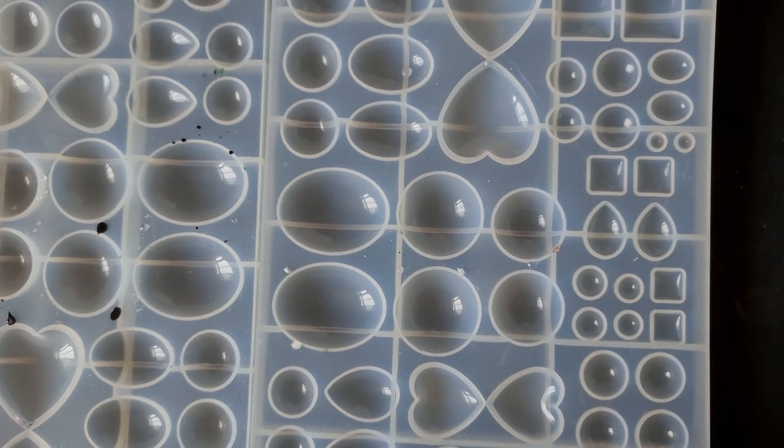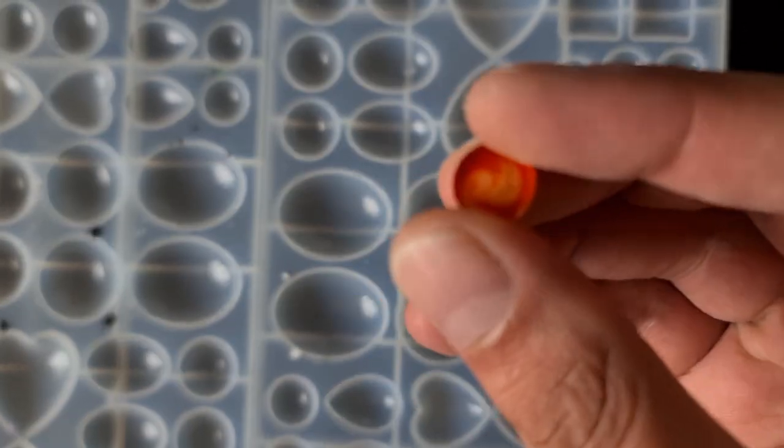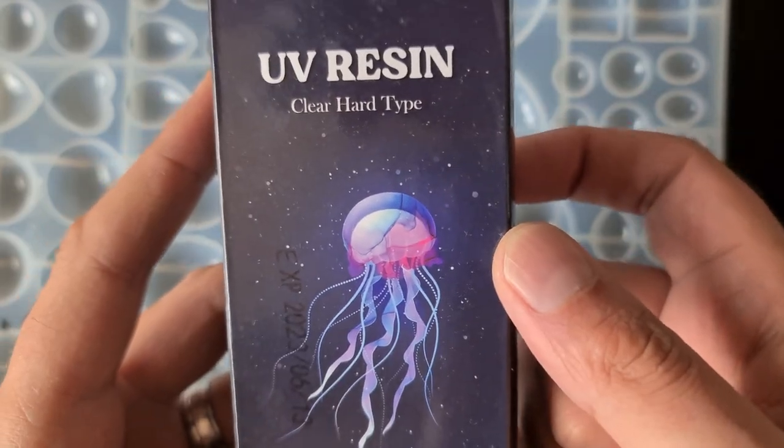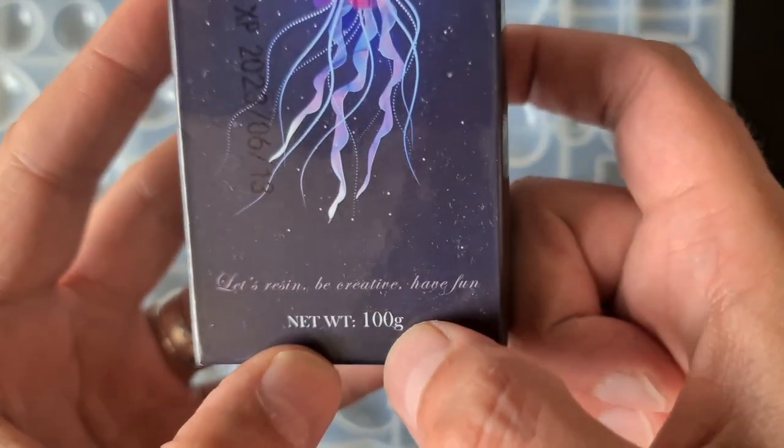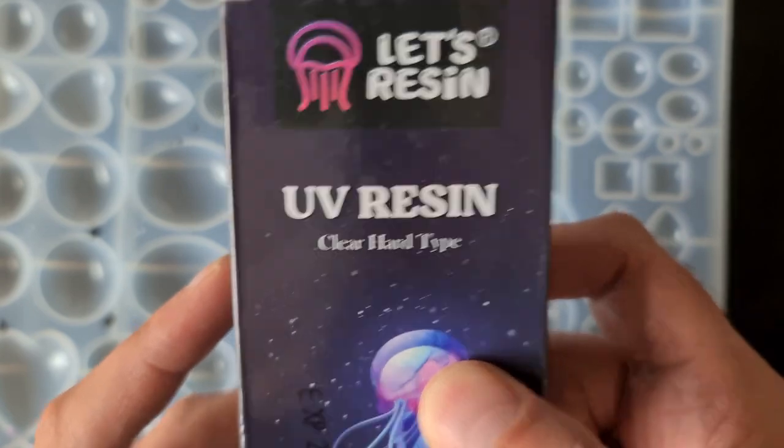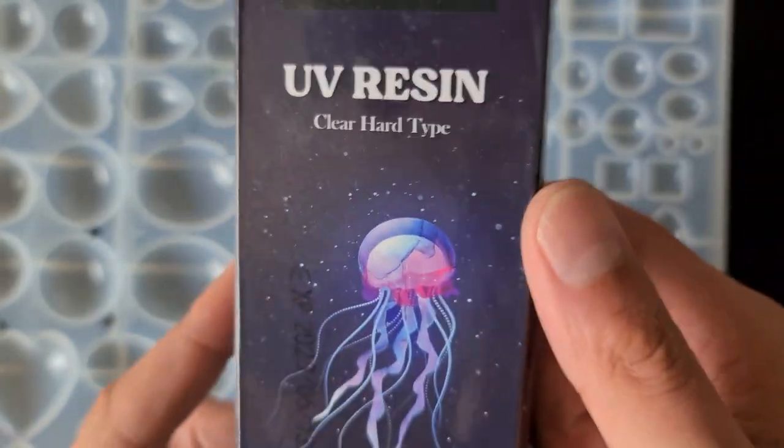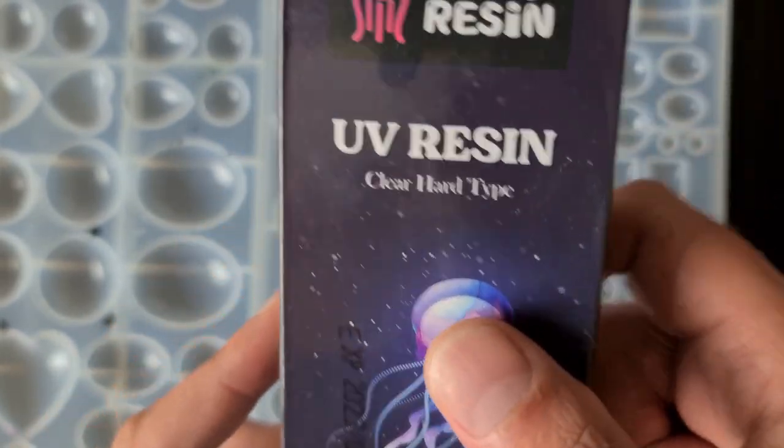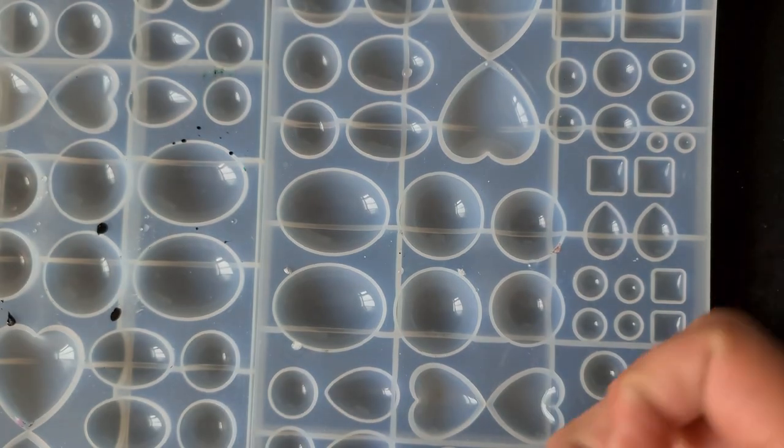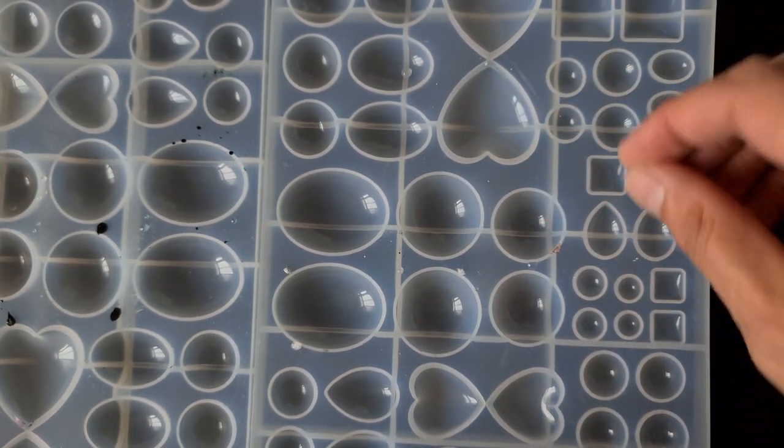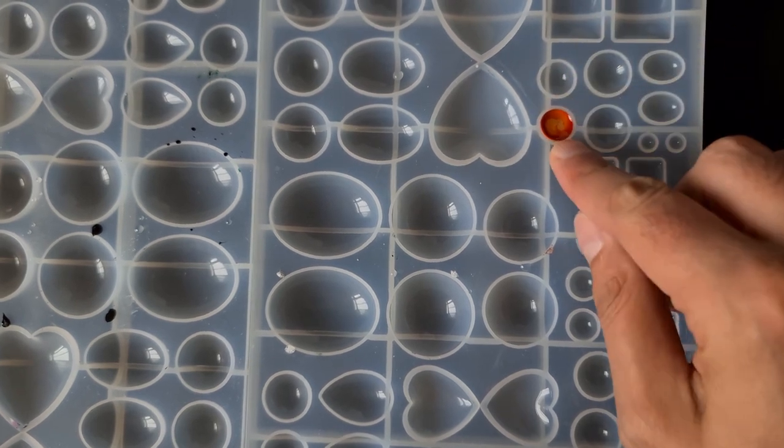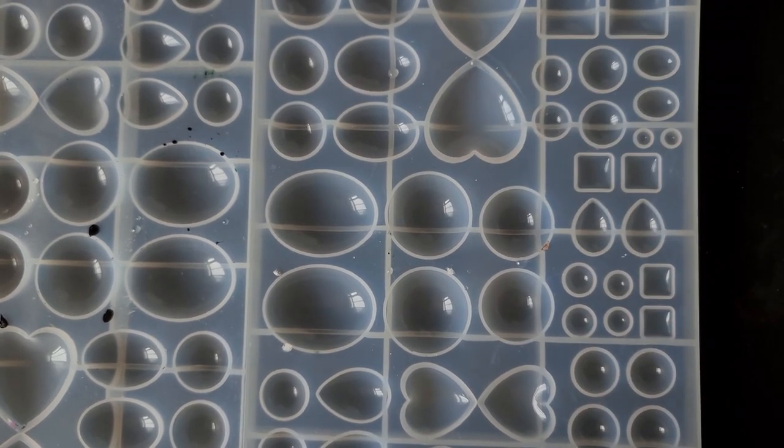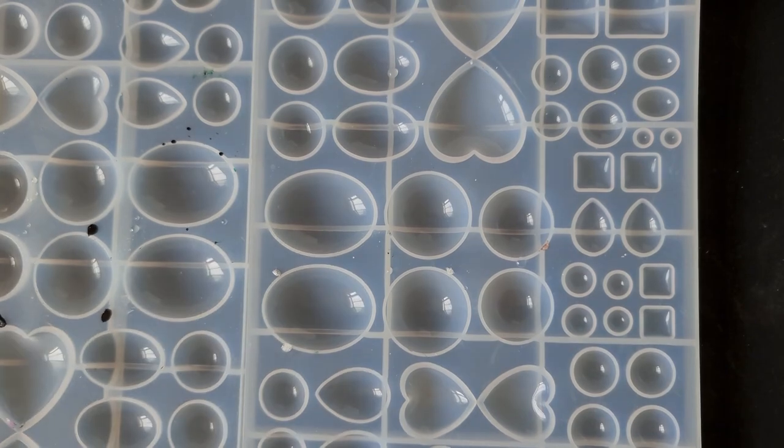And I find the easiest way to just flatten that back is with UV resin. Now this is a handy 100 gram Let's Resin UV resin that's new out in the UK. I'm not sure how long you've had that in the US, but it really is quick and easy to just top those up. Just don't pop them out of the mold. Once they're cured, you then top them up with UV. But I'll do that as we move forward.